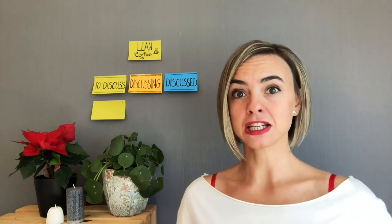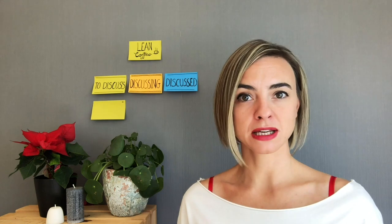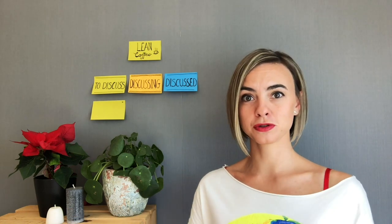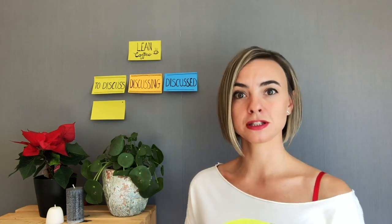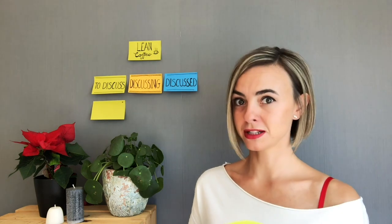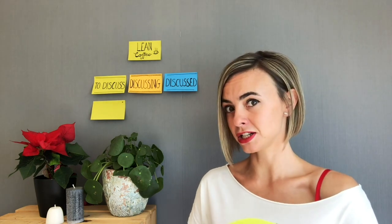Then you decide how much time you want to spend discussing each topic — say, seven minutes. You set the timer to seven minutes and you let the author of the first topic present it. After the seven minutes have passed, the participants decide whether they want to talk about that topic more, voting thumbs up, or they want to move to the next one, voting thumbs down. This way you organize the conversation and empower the participants to make decisions. The presenters need to be concise and engaging so they increase the chance of getting a thumbs up.